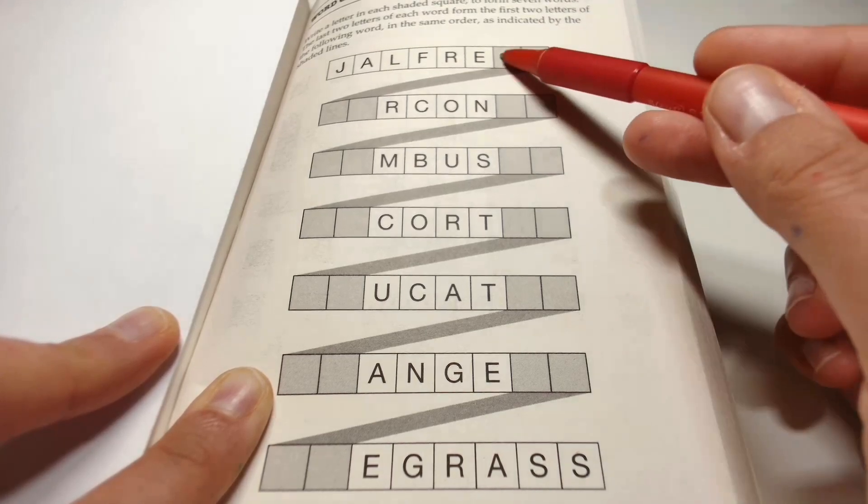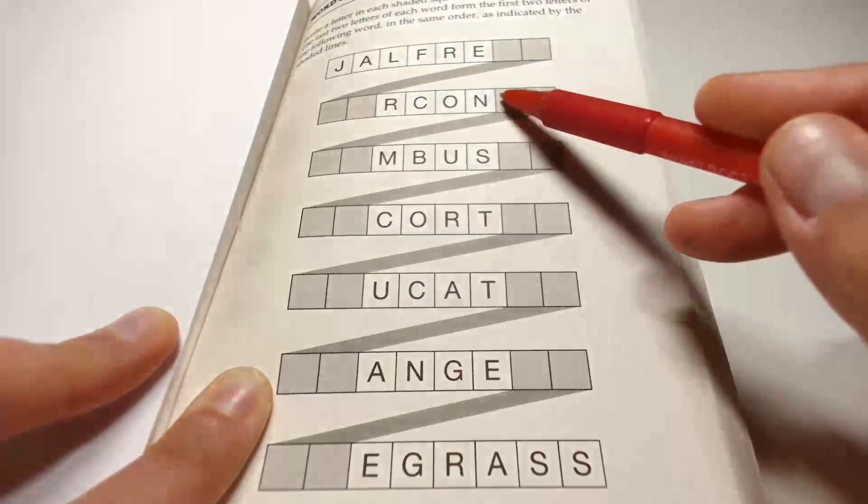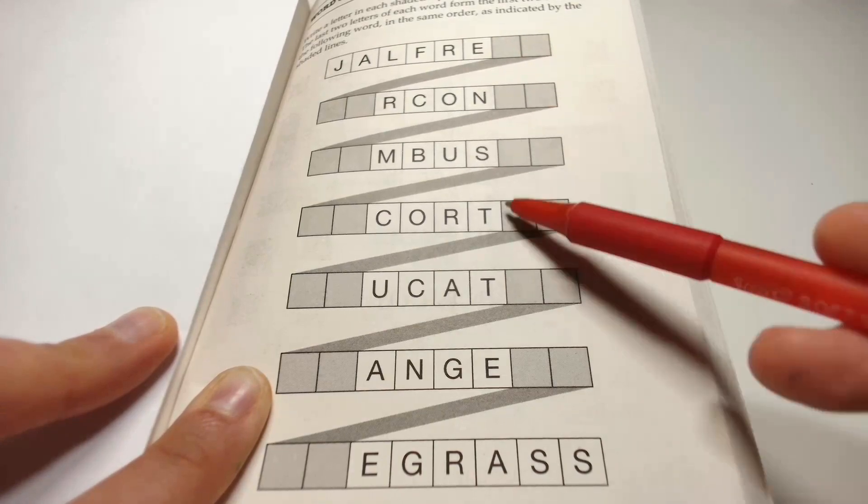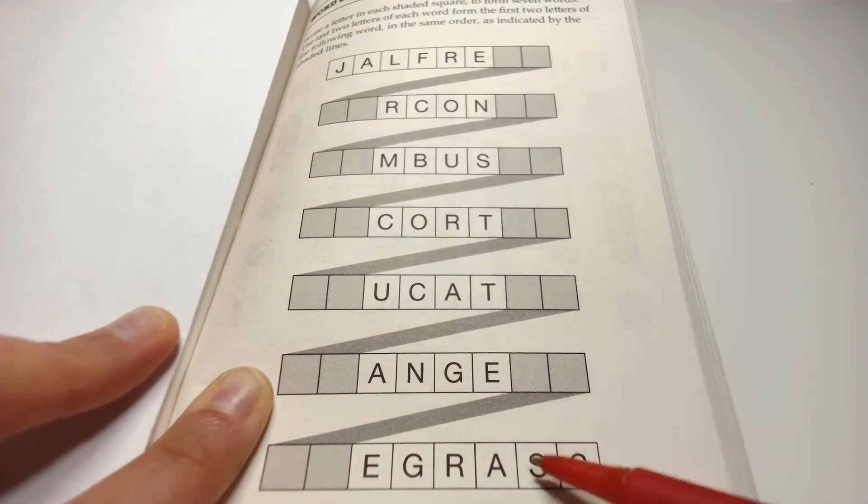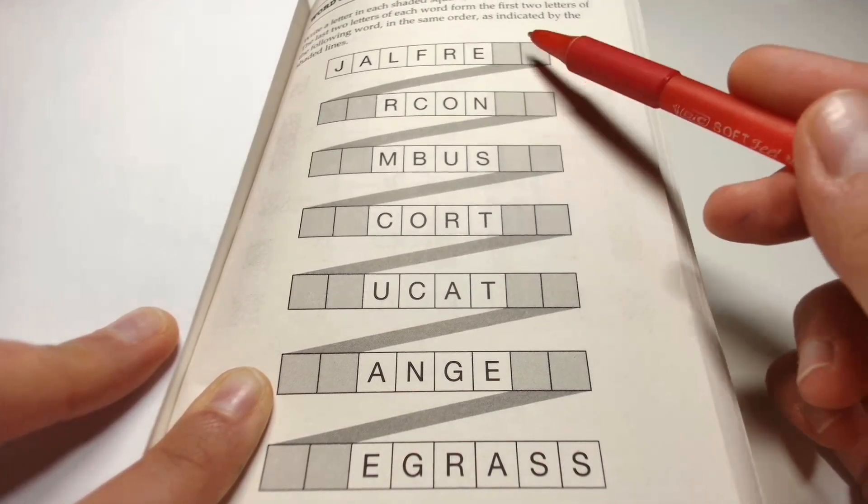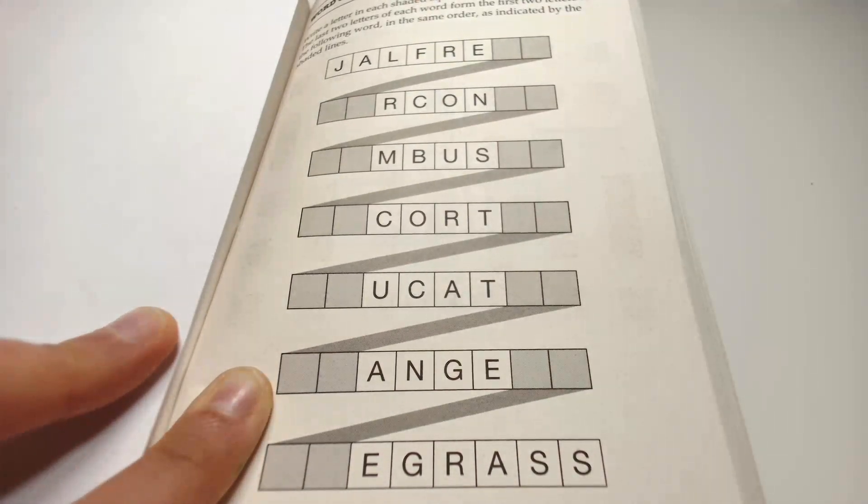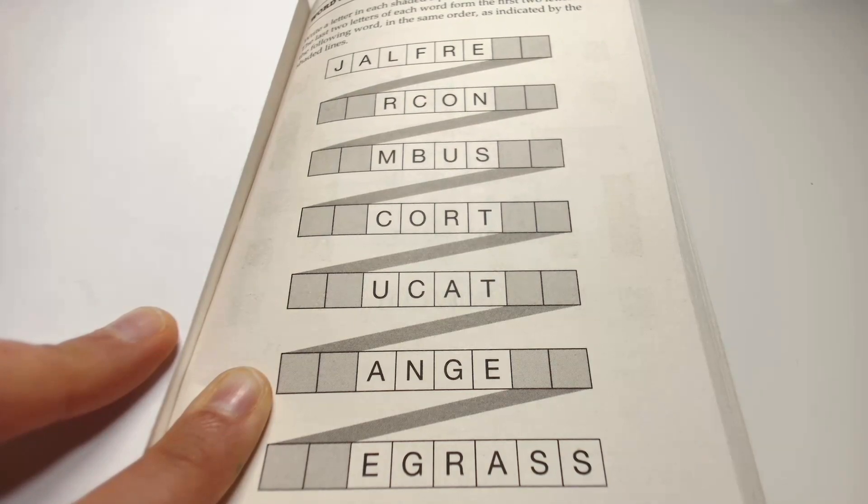Write a letter in each shaded square to form seven words. The last two letters of each word form the first two letters of the following word in the same order as indicated by the shaded lines.